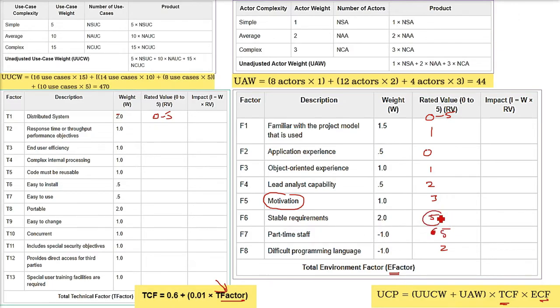Same way. So 1.5 into 1. What do you get? 1.5 here in the last column. 0.5 into 0, you get a 0. So you have to do for each of them. I hope you will be able to do and just write every value and add them. That is going to be E factor. I am not saying it is ECF. It is E factor. Again, we have an expression for ECF. ECF is 1.4 plus minus 0.03 into E factor. Now put this E factor here.